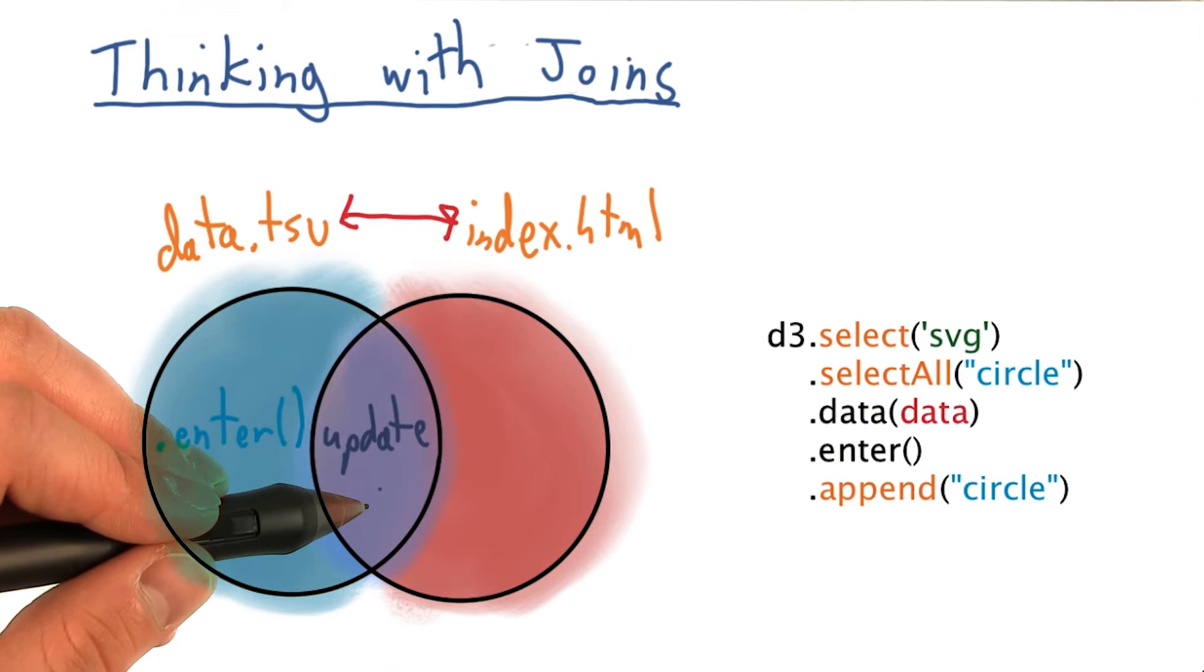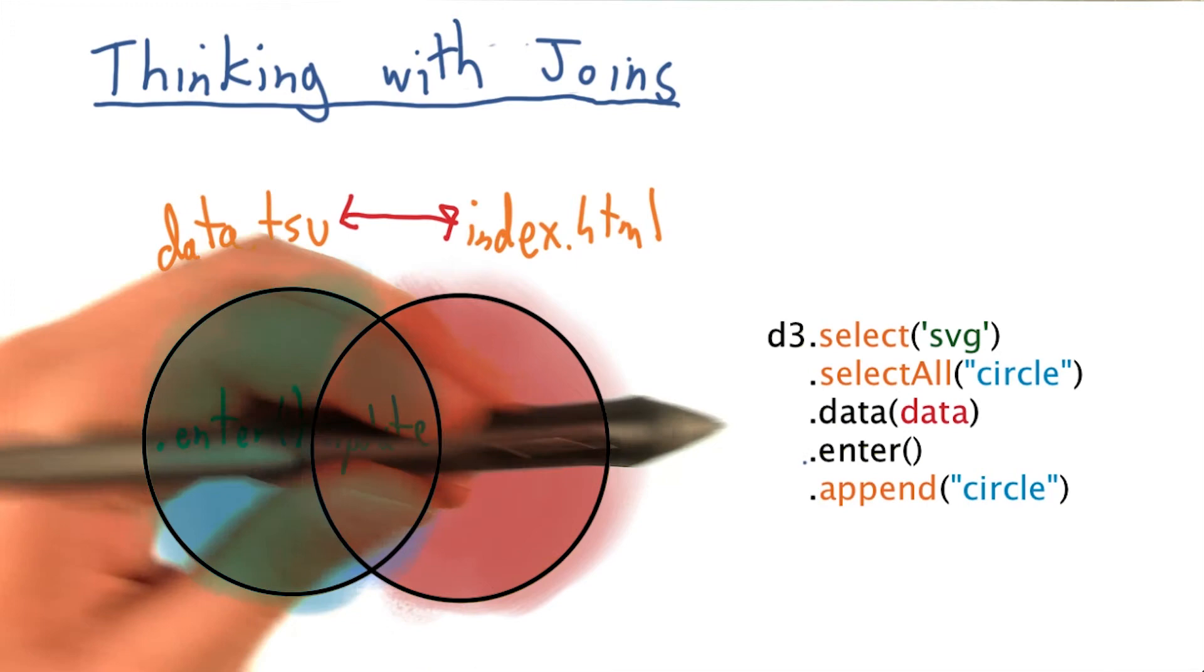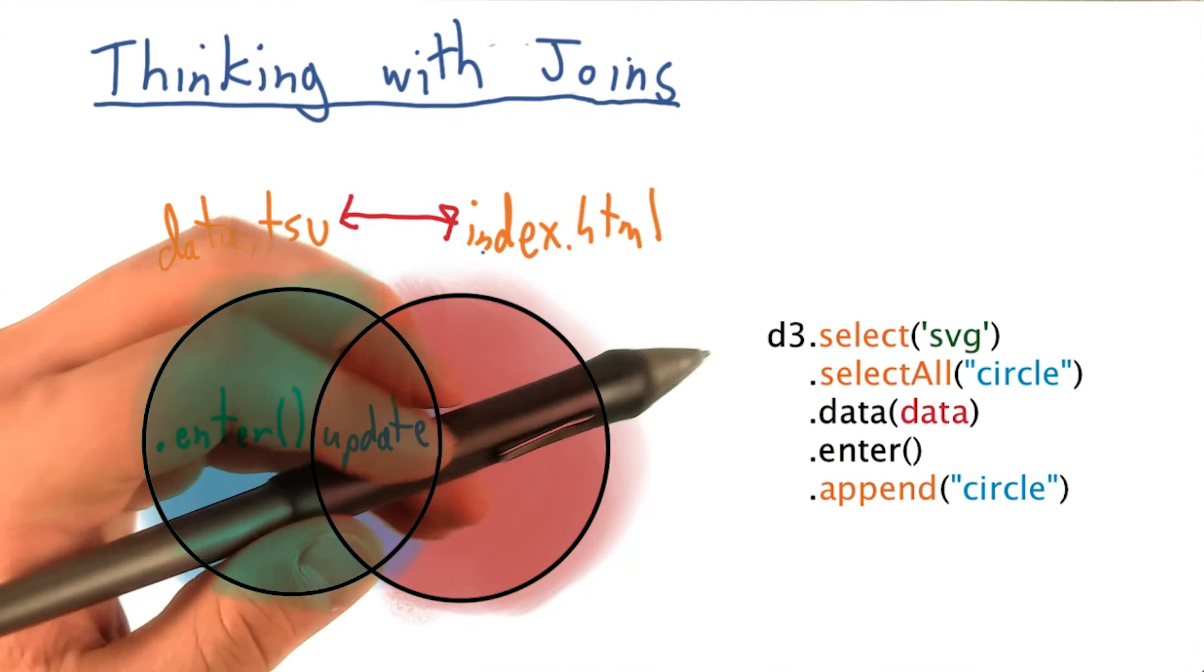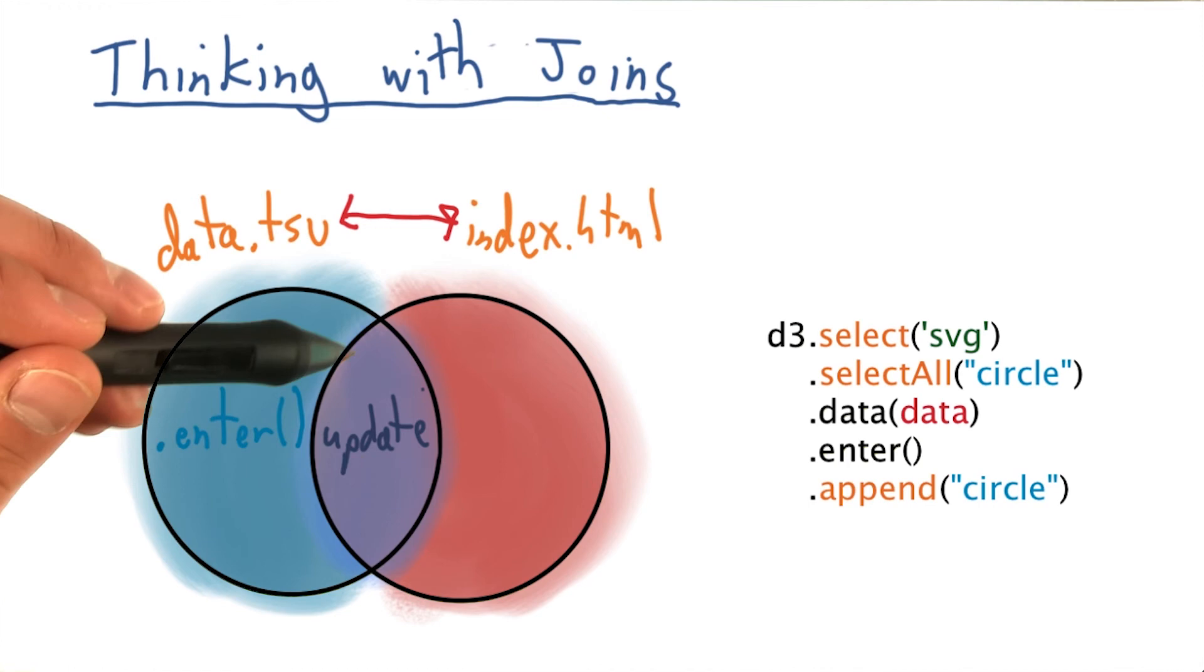And while there's not an explicit dot update we need to call, this section simply corresponds to elements already on our page from our prior selection to the data bind, which we might update their data values or their styling implicitly by leaving out a dot enter or dot exit selection.